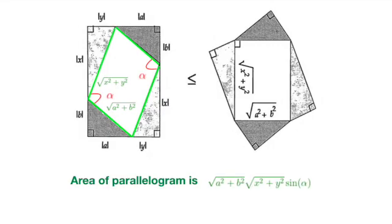The area of this parallelogram is square root of a square plus b square times square root of x square plus y square times sin alpha, where alpha is the angle subtended by the sides above.